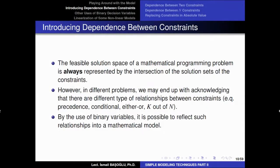Now we are going to move further into some realistic applications. We are going to introduce dependence between constraints and variables. As we have said earlier, in all previous applications seen so far in this class, the feasible solution space of the mathematical programming models we have introduced is represented as the intersection of the solution sets of the constraints.